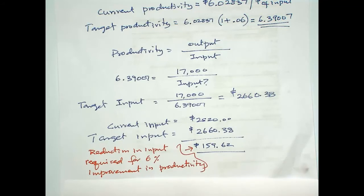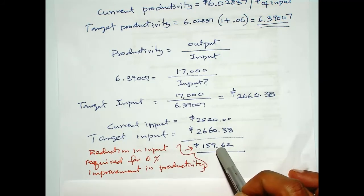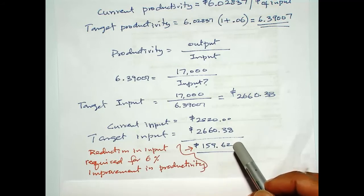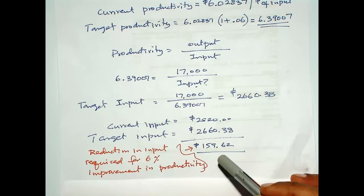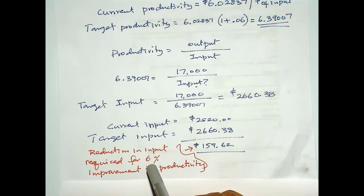Now, you can set targets like, out of this, maybe $100 should come from labor, or $50 from the chemicals used, and so on.